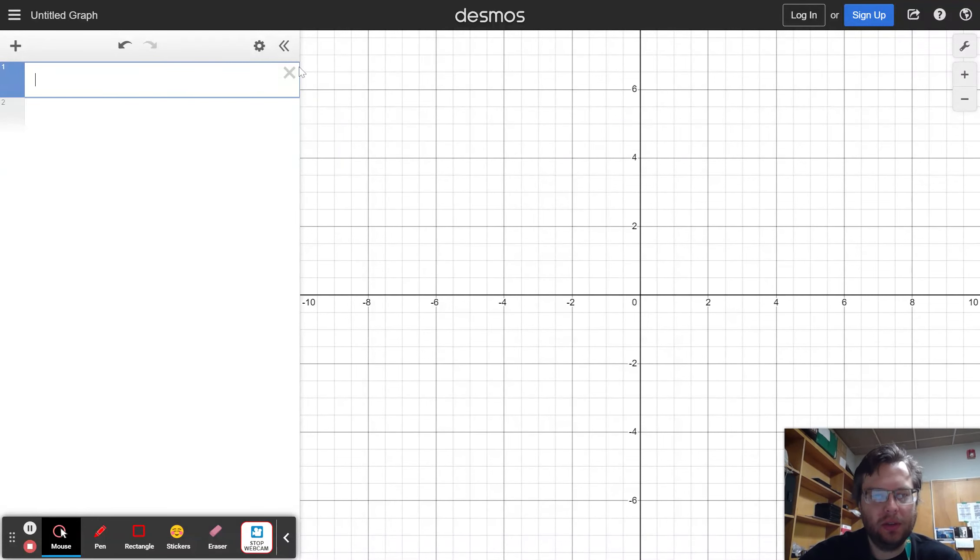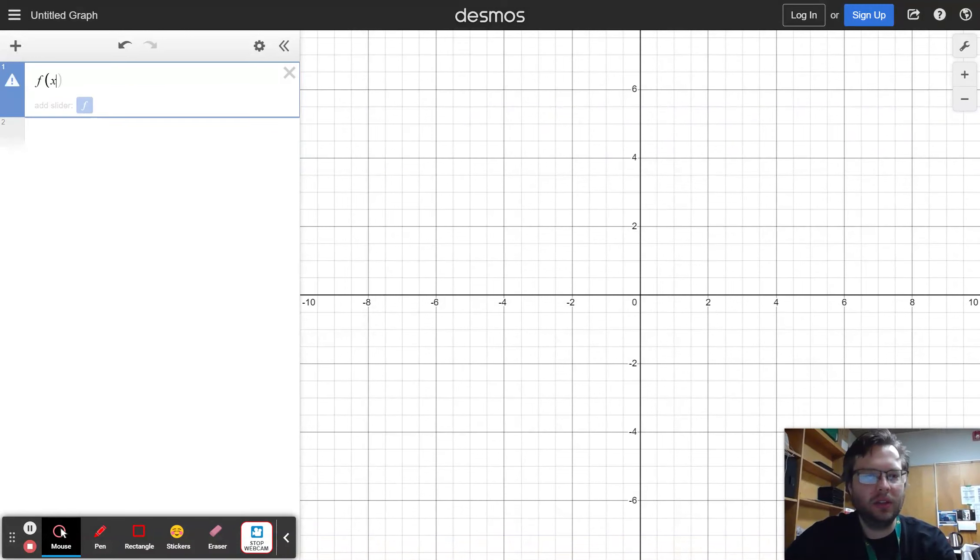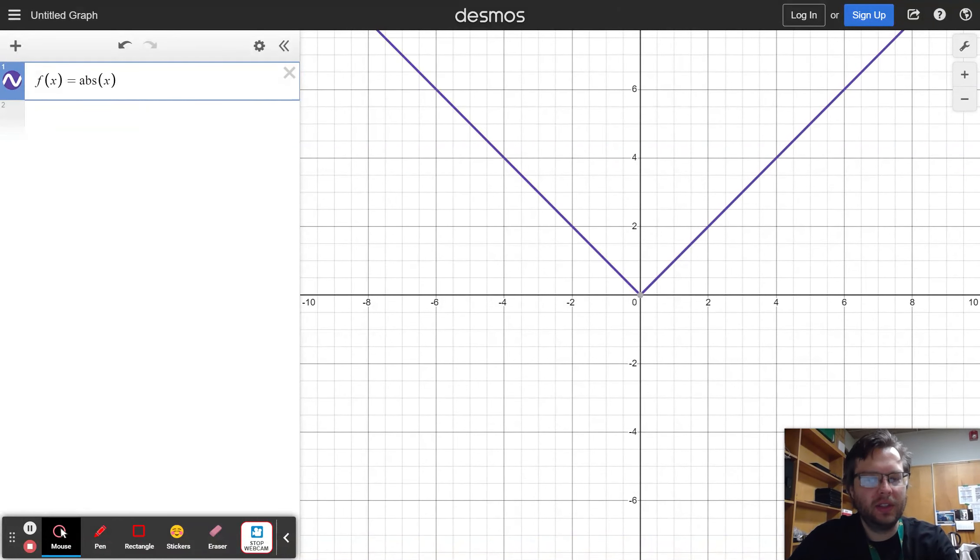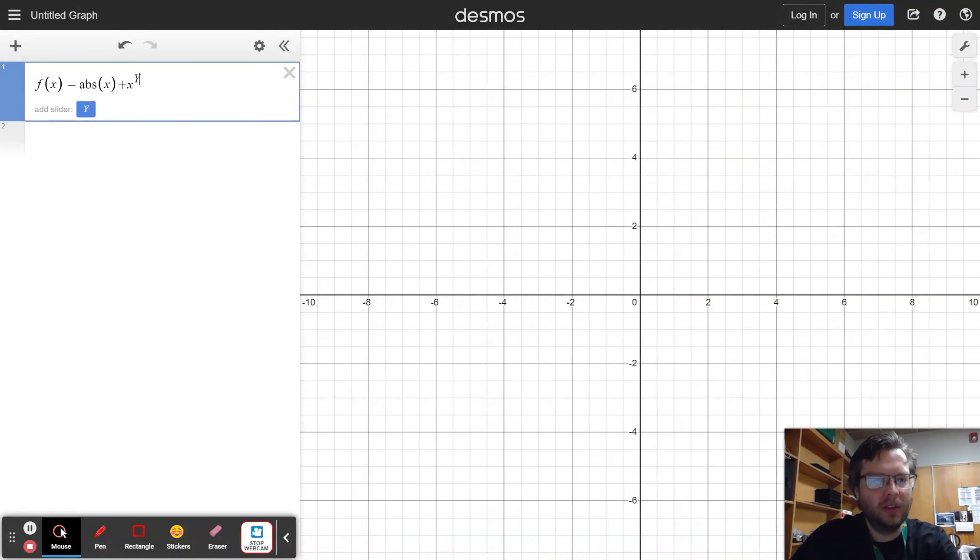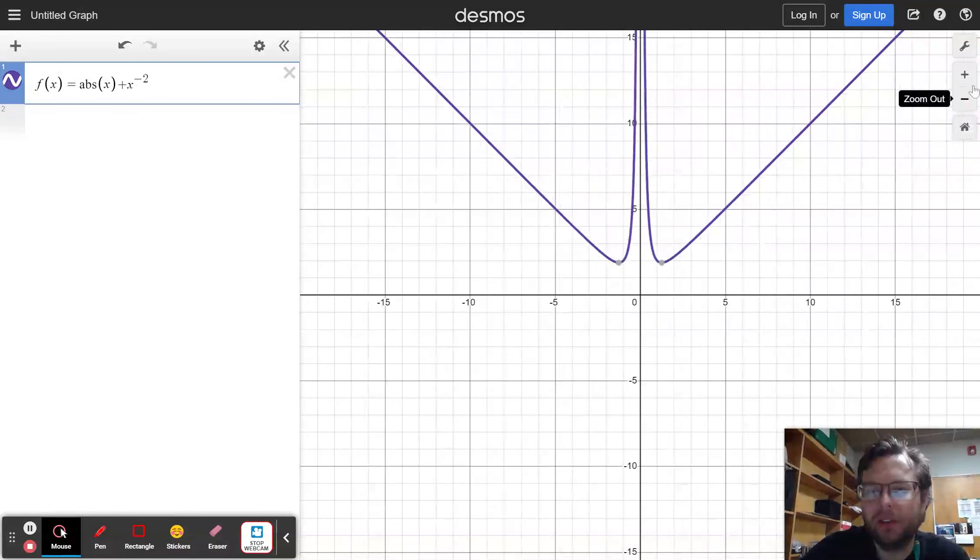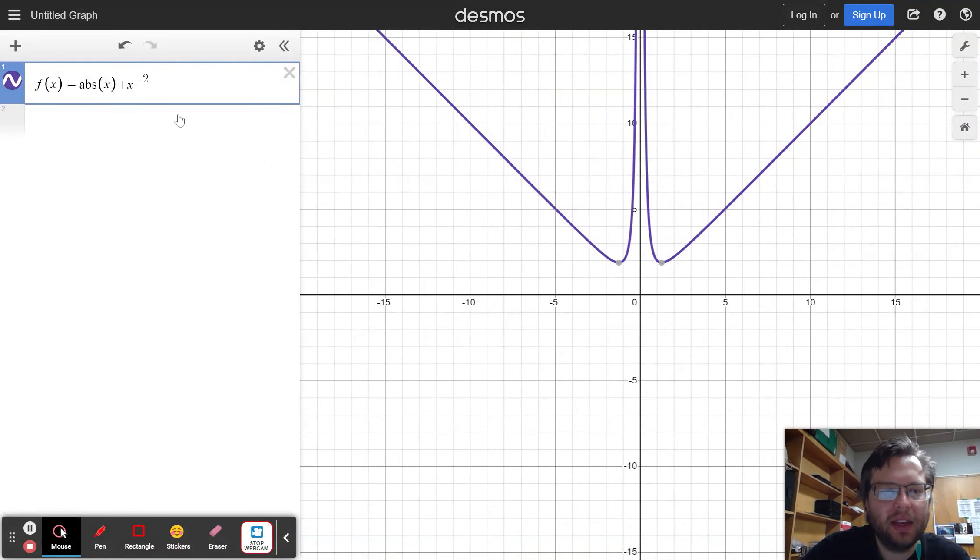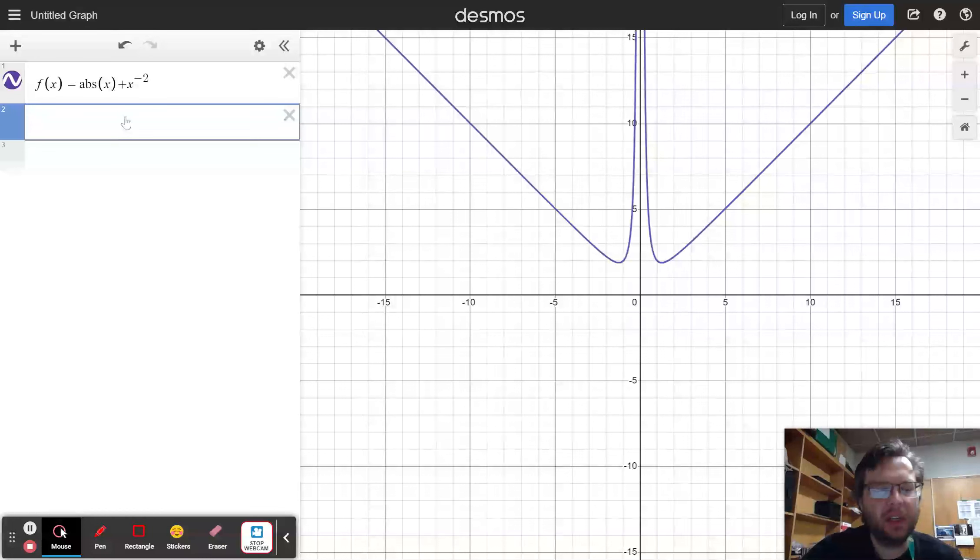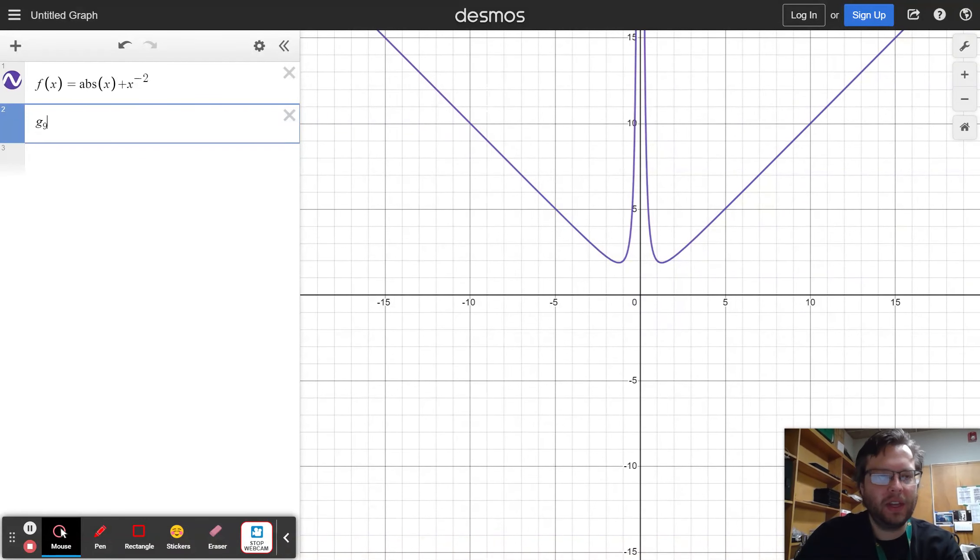So, in the previous video, we looked at how you can take a certain function. It doesn't matter what kind of function you start with. You can start with a weird graph, like absolute value of x plus x to the negative 2. That's a cool looking graph. You can start with that sort of a graph here. And then you can translate it by making a new function.